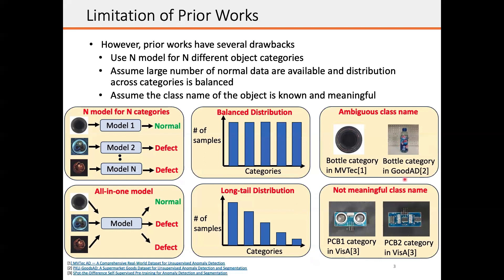Finally, some prior works assume that the class name of the object is known and also meaningful, which is not true in real-world applications. For example, when we are looking at this image from the bottle class of MVTEC, we might not describe it as a bottle. Furthermore, knowing the class name PCB1 and PCB2 does not help us distinguish what PCB this is.